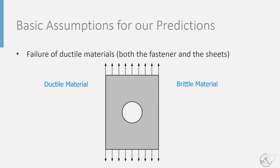Before we do that we need to cover a few basic assumptions for our predictions. The first very critical assumption is that we will only consider the failure of ductile materials, both in the fastener as well as the sheets.